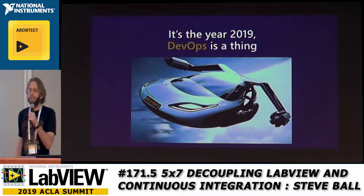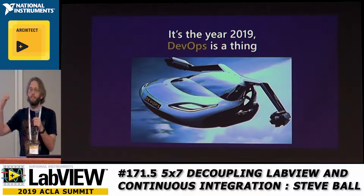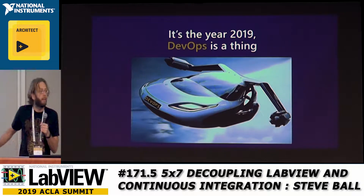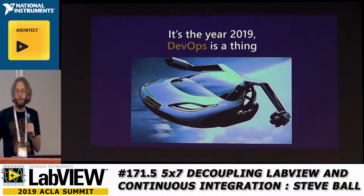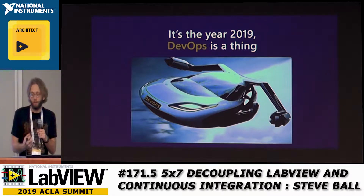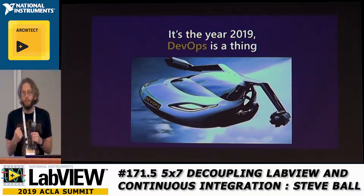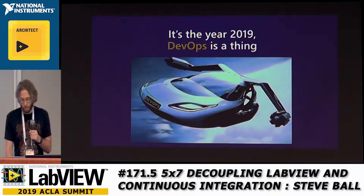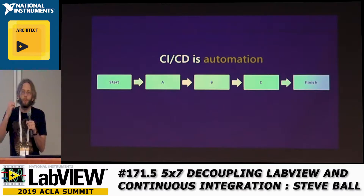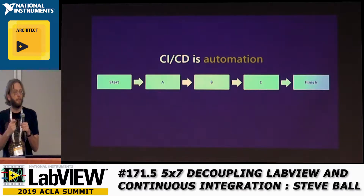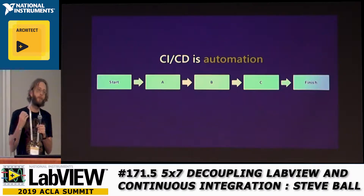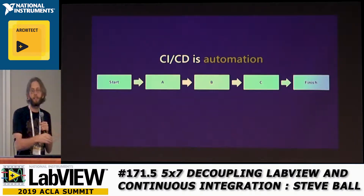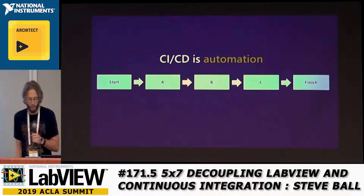It's 2019, DevOps is a job title. This is a widely accepted part of modern software development. We should be using CI and LabVIEW — that sweet automation where we're making computers do the work for us, so we don't have to run things manually.